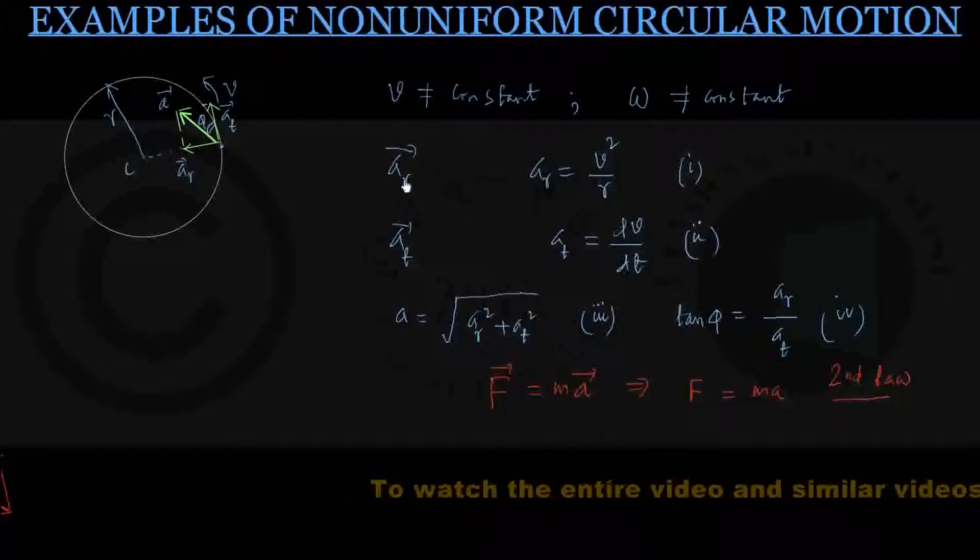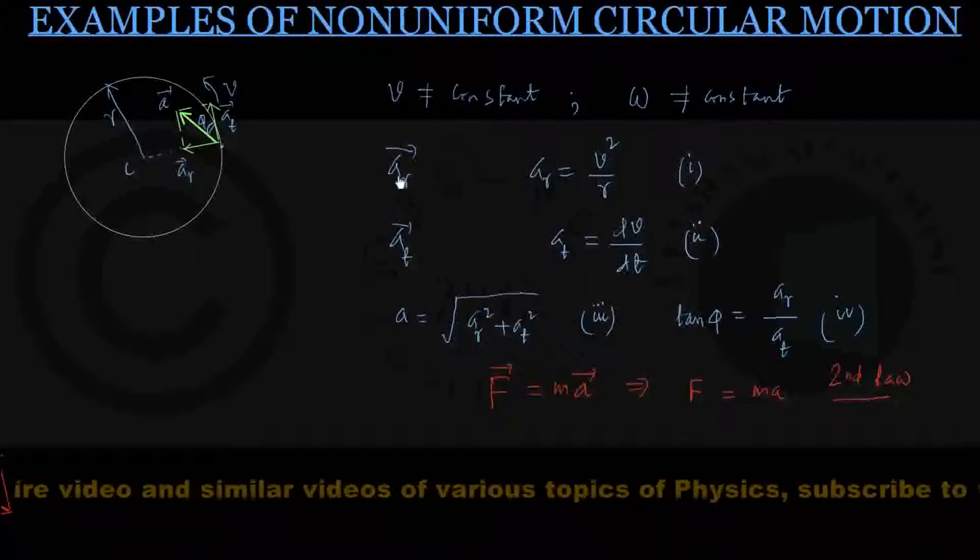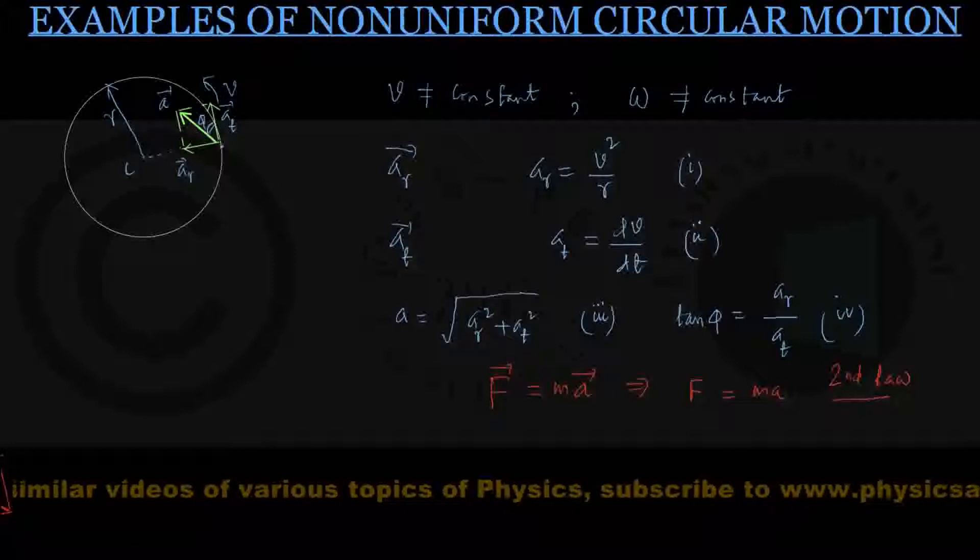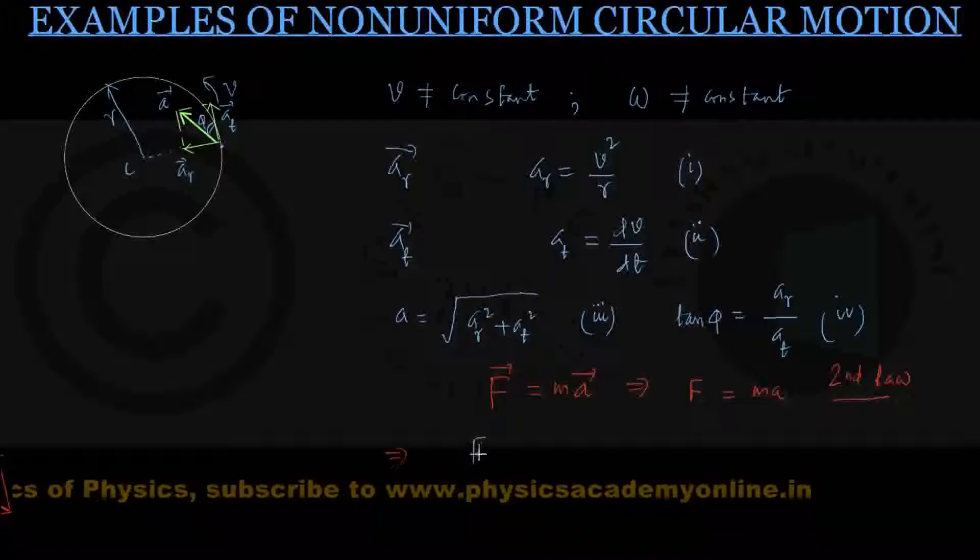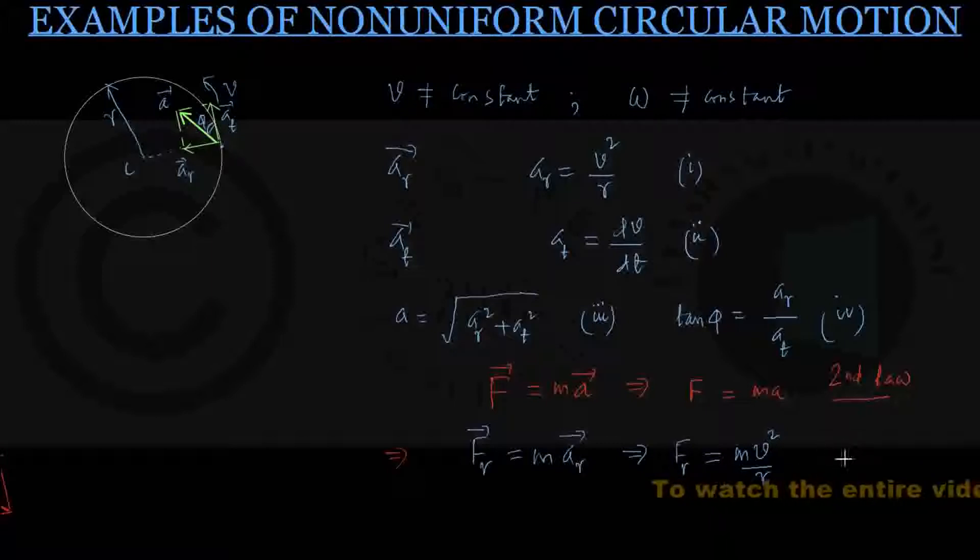We can see that since F accounts for the acceleration A, similarly here I can argue this AR, centripetal acceleration, must be caused by a centripetal force. That is, we could write down that FR, the centripetal force, is given by mass into centripetal acceleration, this is in vector form. And if you go from here to scalar format, I could write down the centripetal force magnitude is equal to mass into V square by R, because that is the value of AR, and that I shall call my equation number 5.